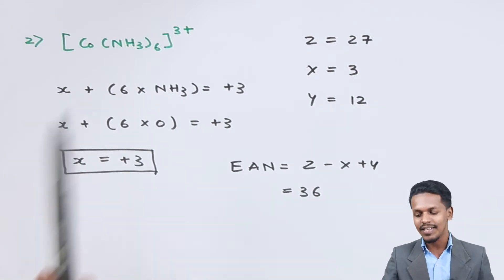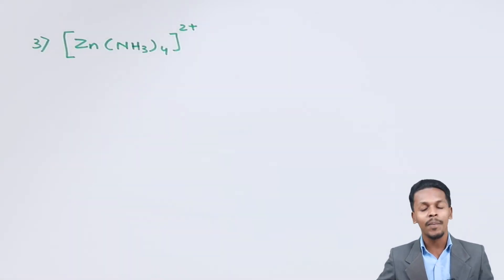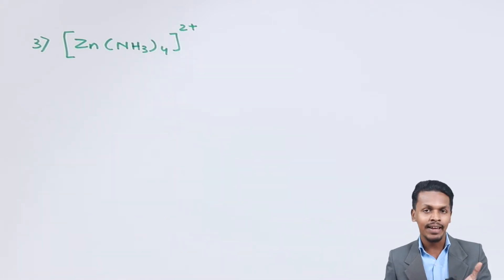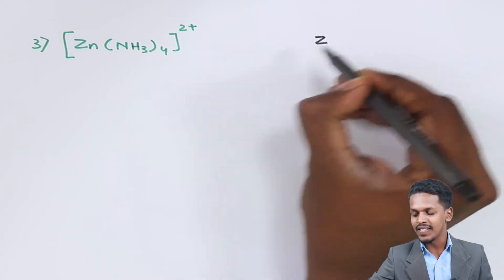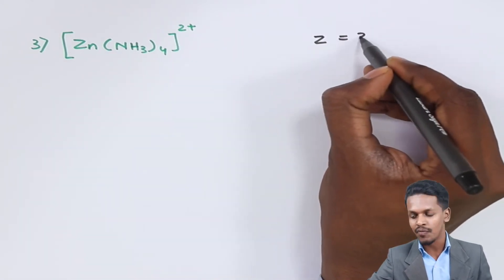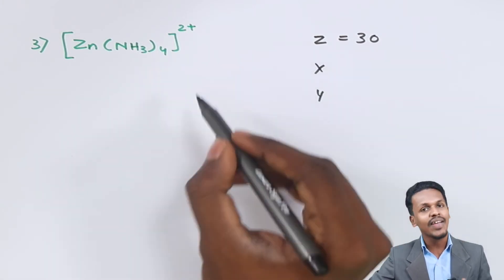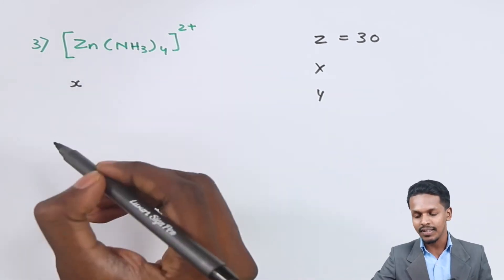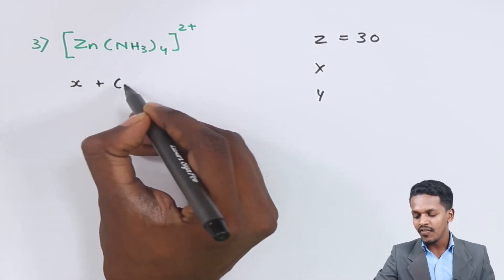This confirms the complex is stable. Moving to the next complex, this is again a cationic complex. We can also calculate the EAN for anionic complexes, but for now let's work through this one. The central metal atom is zinc, and the atomic number of zinc is 30.